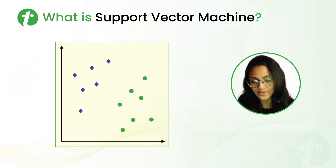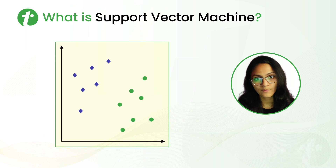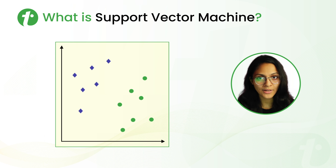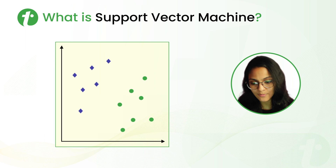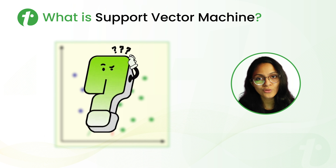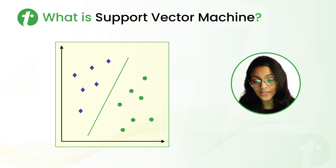Let's say we have two categories — blue and green — and we have plotted these data points on a graph. Now we have to separate them using a line. We can separate these categories by drawing either of two lines: red or green. The question arises: which line should we choose? In this case, we choose the green line.